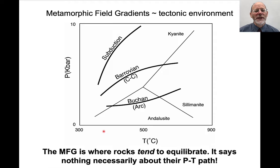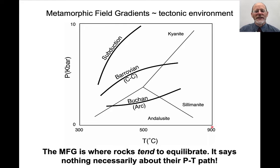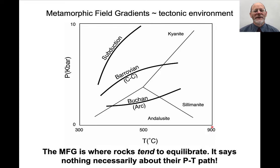How do metamorphic rocks form? In metamorphic petrology, we often describe the conditions of metamorphism in reference to a pressure versus temperature diagram. Pressure is in kilobars — 10 kilobars is about 35 kilometers depth in the crust. Typical metamorphic temperatures range from about 300 or 400 degrees C up to 800 or 900 degrees C. If you go out in the field and walk in a particular direction, you may find minerals that form at higher and higher temperatures and pressures.